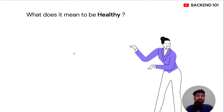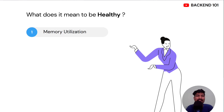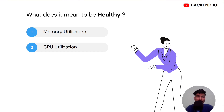First thing first, what does it mean to be healthy? How can we say that a particular service is healthy? We know that the service should be able to perform its expected task in a correct way. Besides that, it should be performing those tasks in a memory efficient way — it should not cross the memory threshold provided to that service. It should also not cross the CPU threshold. For example, if a CPU threshold for a particular service is 70% and that service utilizes more than 70% of the CPU, then we can mark that service as unhealthy.